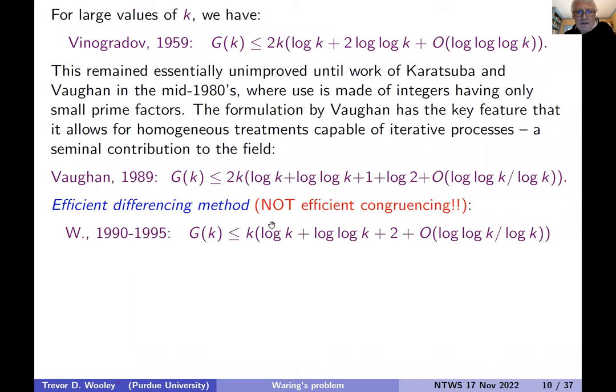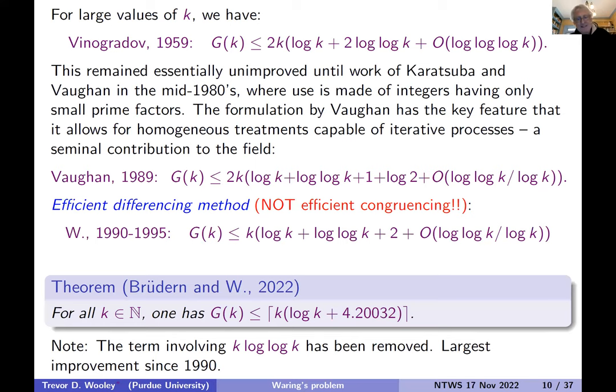And then in my thesis, I was able to save a factor roughly 2. And this is where this method, which I call the efficient differencing method—not the efficient conferencesing method, we shouldn't be confused—there are different methods. I noticed in Larry Guth's ICM paper, he suggests that I was working on efficient conferencing in the 1990s. It's not the case. These are different methods.